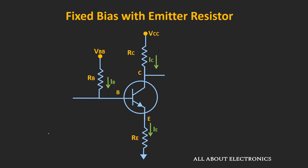We had also seen that in the fixed bias configuration, by connecting this emitter resistor, it is possible to stabilize the operating point against the variation in the β. And by properly selecting the values of the base and the emitter resistor, it is possible to make the operating point almost independent of the variation in β. But in this configuration, we require two power supplies. Instead of using two power supplies, it is possible to derive this voltage source from VCC using the voltage divider circuit.